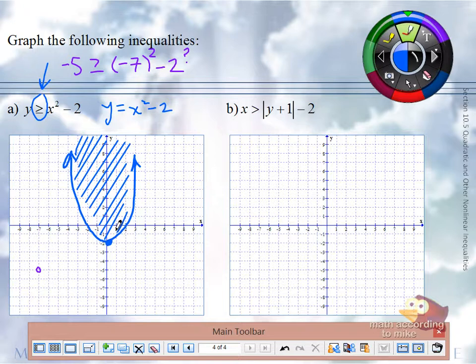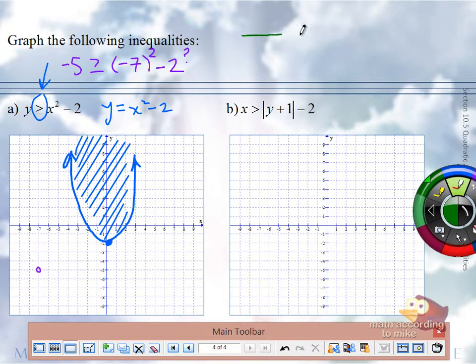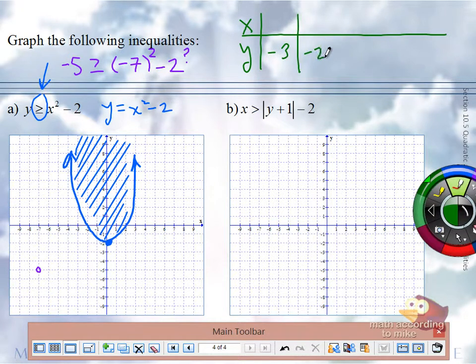I'll make a table. We'll do negative 3, negative 2, negative 1, 0, 1. This should do nicely. If I put a negative 3 in for y, I'll do negative 3 plus 1, which is negative 2. Its absolute value is 2. 2 minus 2 is 0. Okay. So, that's the ordered pair, 0, negative 3.